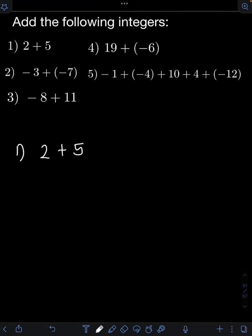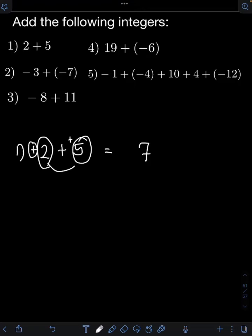So how do we add integers? For our first problem, notice that we have like signs — we have positive 2 and positive 5. So if we have like signs, we just add the absolute value of the numbers. We add 2 plus 5, disregarding the signs. So that will be 7. And then we just need to copy the same sign, which is positive. So we have positive 7, or simply 7.